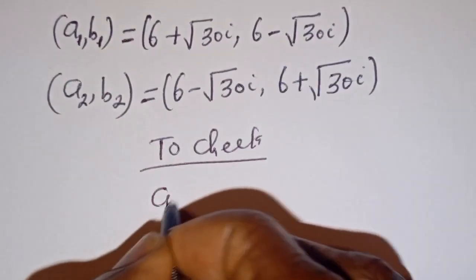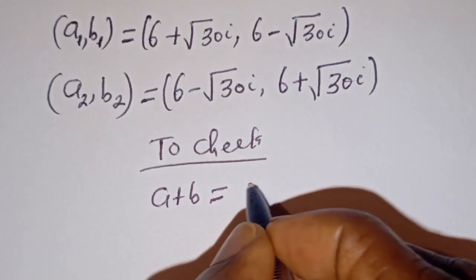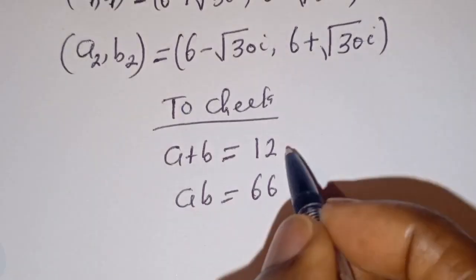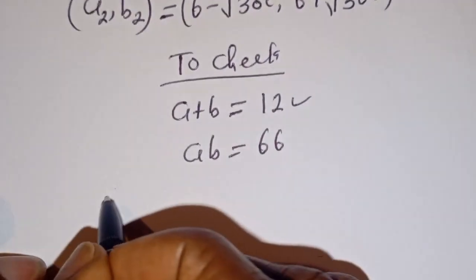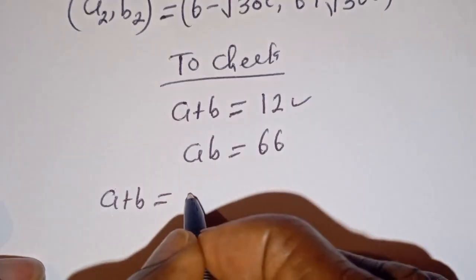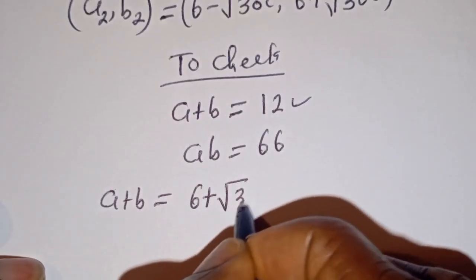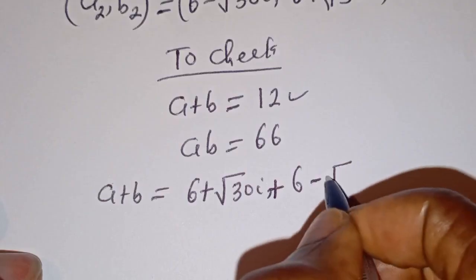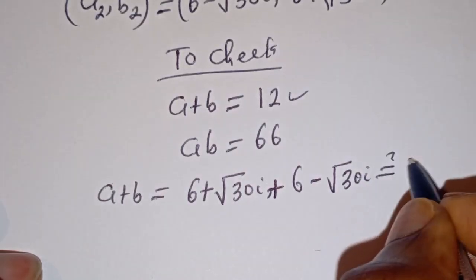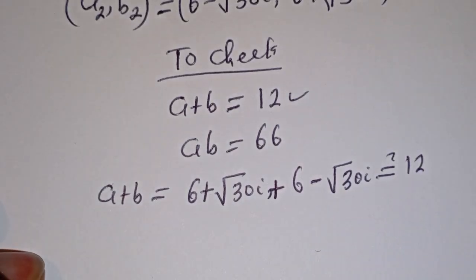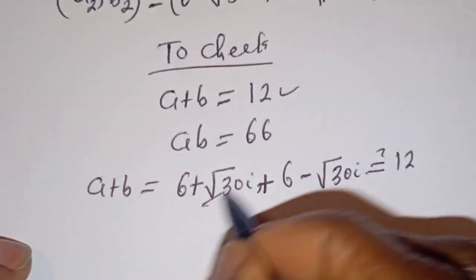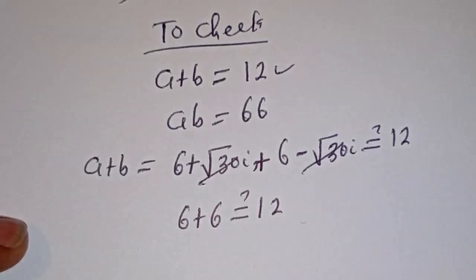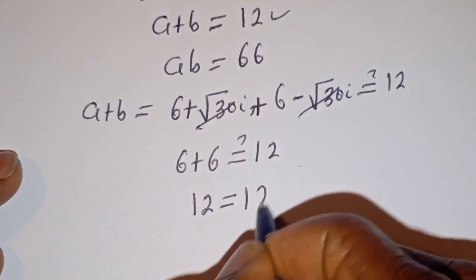To check: A plus B is equal to 12, and A times B is equal to 66. Let's verify using these values. A plus B equals (6 plus square root of 30 i) plus (6 minus square root of 30 i). The imaginary parts cancel, leaving 6 plus 6 equals 12, which is true.